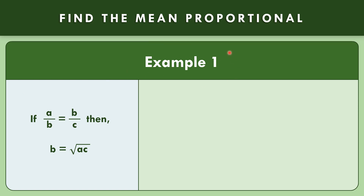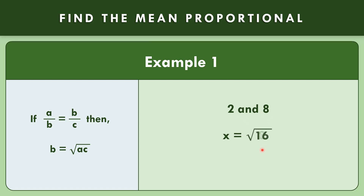In example number 1, let us find the mean proportional of 2 and 8. Our formula is b equals the square root of ac. So it means we need to multiply 2 times 8. x is equal to the square root of 2 times 8, that is the square root of 16. The square root of 16 is equal to 4. So the mean proportional of 2 and 8 is equal to 4.